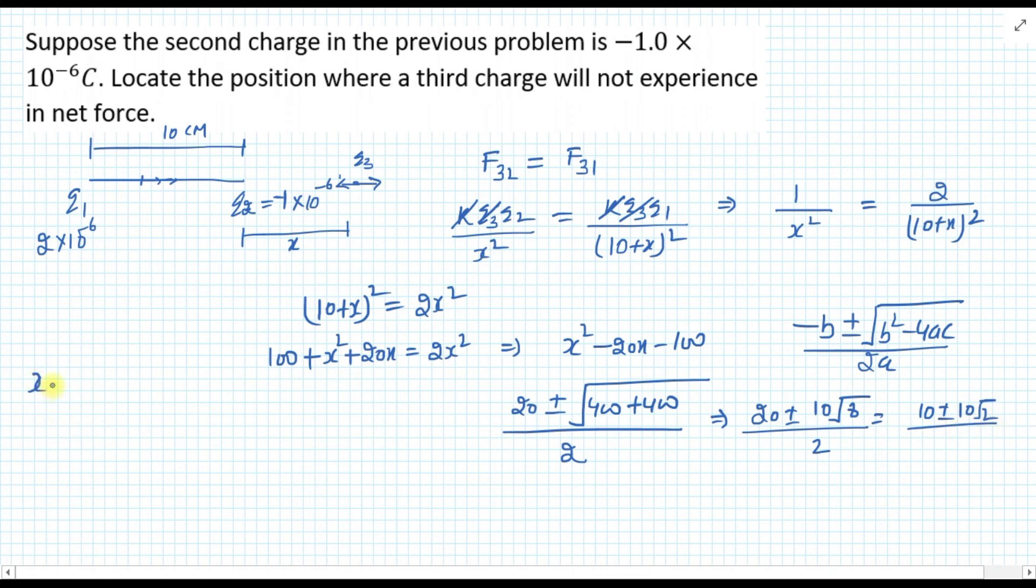So there can be two answers. One is 10 plus 10 root 2, and the other can be x equals 10 minus 10 root 2. This 10 minus 10 root 2, what result will it give you? See, root 2 is greater than 1, so 10 root 2 is greater than 10, so answer will be minus. So minus means what? That x is negative.